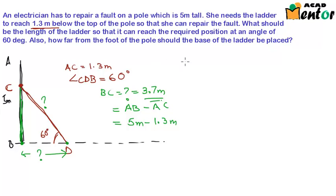These two lengths we have to find out and it is actually pretty simple. If we look at it carefully, triangle BCD is a right angle triangle because this pole is perpendicular to the ground. So this angle here, angle B is 90 degrees. And when we have a right angle triangle, we can always apply the concept of trigonometry.